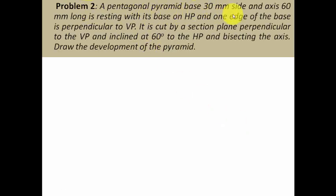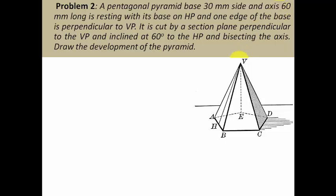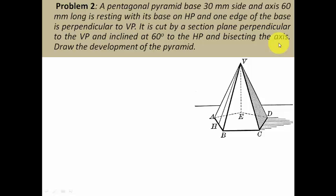A pentagonal pyramid with base 30mm side and axis 60mm long is resting with its base on HP and one edge of the base is perpendicular to the VP. It is cut by a sectioned plane perpendicular to the VP and inclined at 60 degrees to the HP and bisecting the axis. All these conditions should reflect perfectly in our drawing. Draw the development of the pyramid.